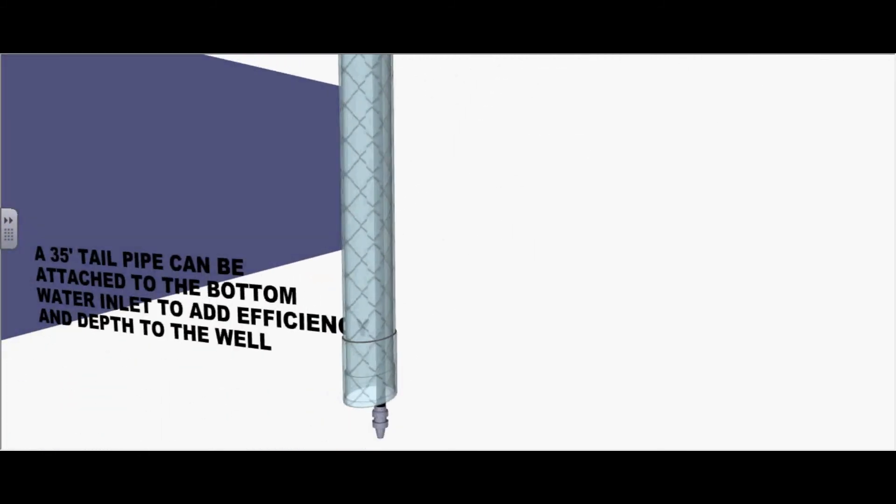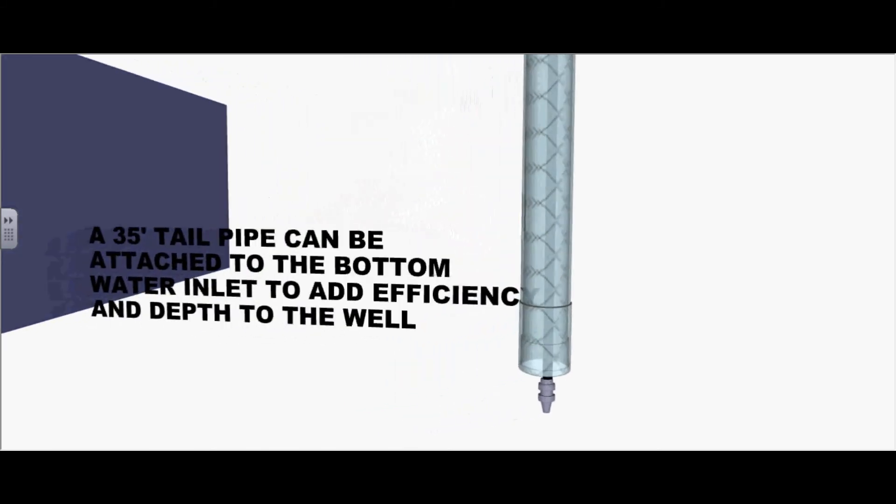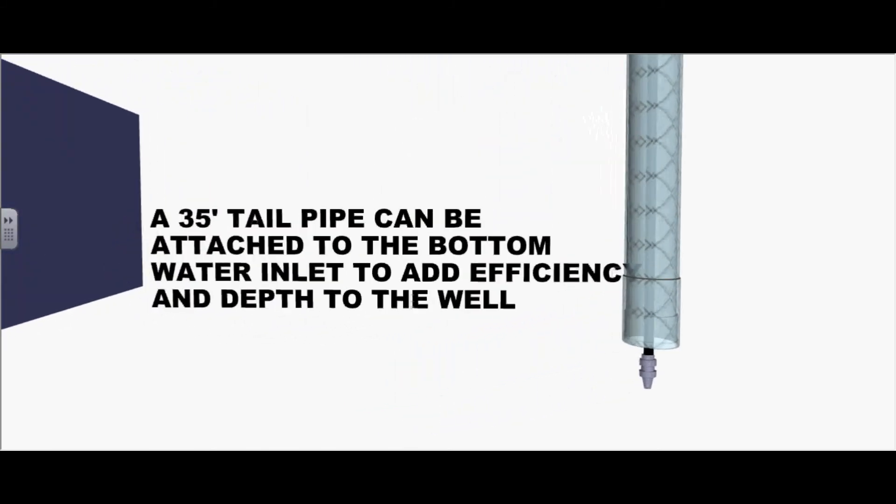It is also possible to put a 35 foot tail pipe or attach it to the bottom of the water inlet to add efficiency and depth to the well.